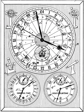Briefly, sidereal time is a time scale that is based on Earth's rate of rotation measured relative to the fixed stars. Viewed from the same location, a star seen at one position in the sky will be seen at the same position on another night at the same sidereal time. This is similar to how the time kept by a sundial can be used to find the location of the Sun.